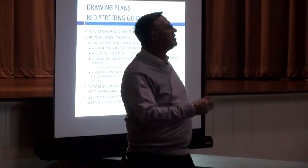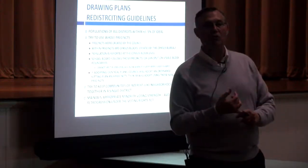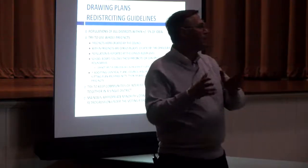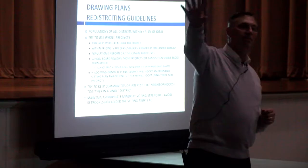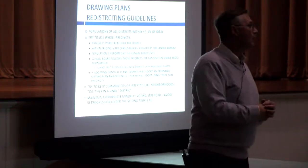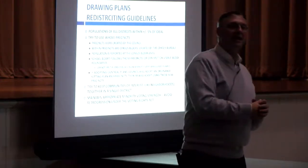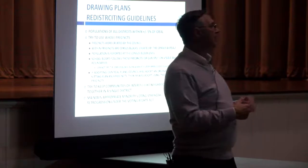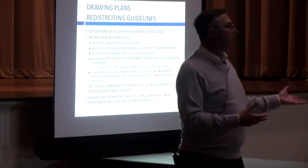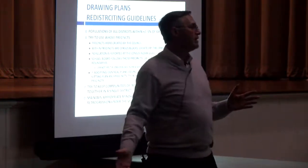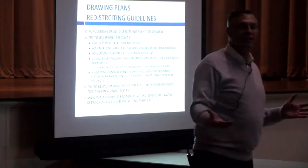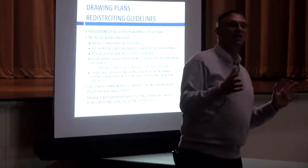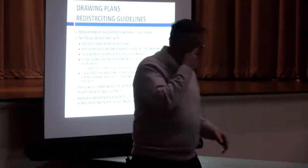Another consideration is the Voting Rights Act — specifically retroaggression, which prohibits doing anything to impair existing minority voting strength. It used to require submitting adopted plans to the U.S. Department of Justice for preclearance. However, a 2013 Supreme Court decision struck down the list of covered jurisdictions — Louisiana was on that list — and Congress hasn't fixed it since, so there is no preclearance requirement anymore. That actually helped here because preclearance could take 60 to 90 days after plan adoption, which would have been difficult given the compressed census timeline.